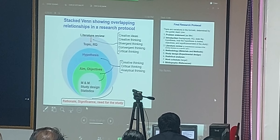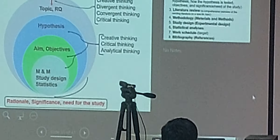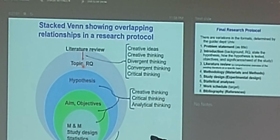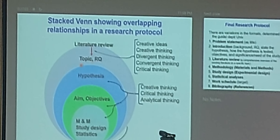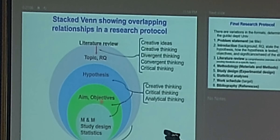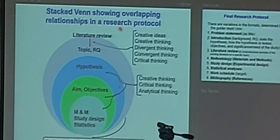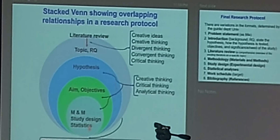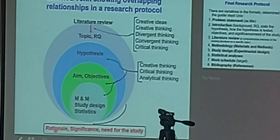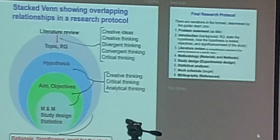Summarizing the whole thing: the literature review should be able to give rise to the topic and research question, and then you have the hypothesis. You have research objectives, methods, and literature design — all of them will be based upon the central one and should be able to answer: what is the rationale of the study, what is the significance, and what is the need for the study.